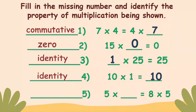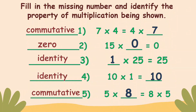The last one: five times blank equals eight times five. The missing number is eight. And that shows commutative property of multiplication.